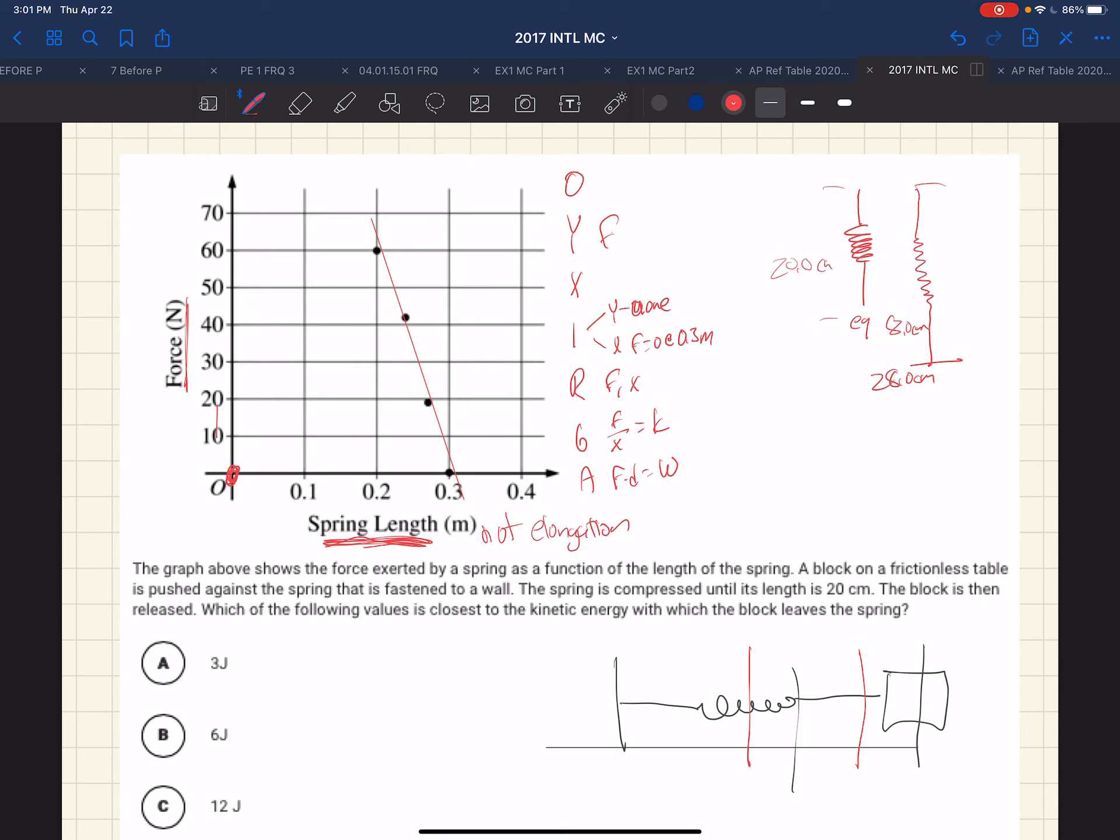The spring is compressed until its length is 20 centimeters. That's 0.2 meters. And that's what we can see is this location here.